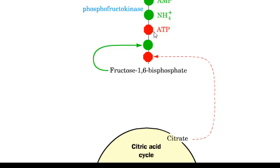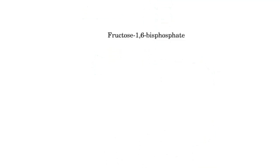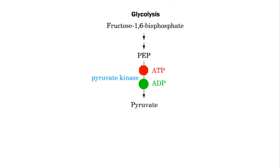Phosphofructokinase is allosterically inhibited by ATP and by citrate, a Krebs cycle intermediate — the only example of a citric acid cycle intermediate regulating a glycolytic enzyme. In the last step of glycolysis, phosphoenol pyruvate (PEP) is converted to pyruvate, mediated by pyruvate kinase, which is also an irreversible step.